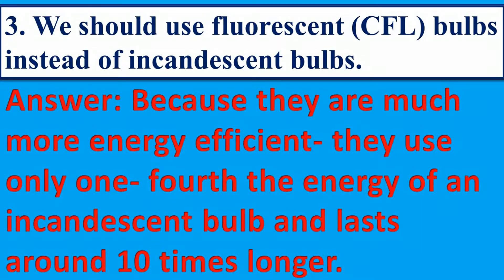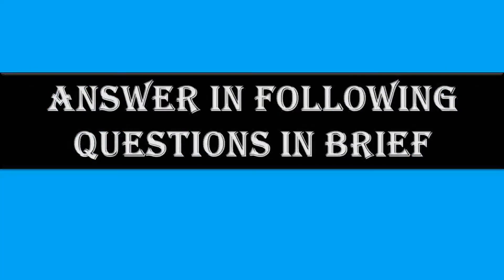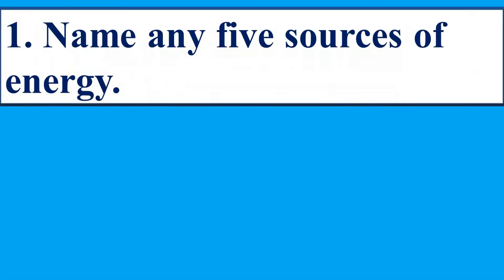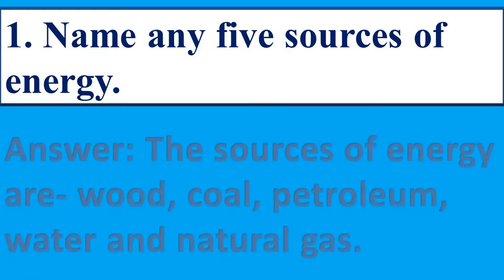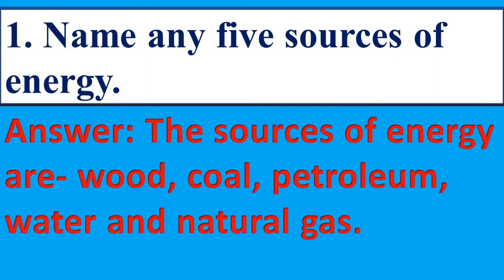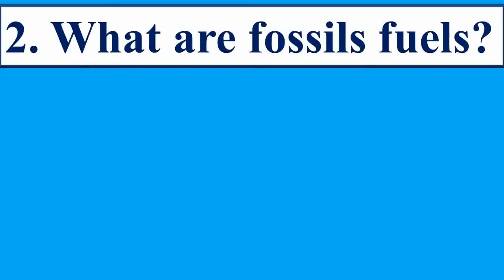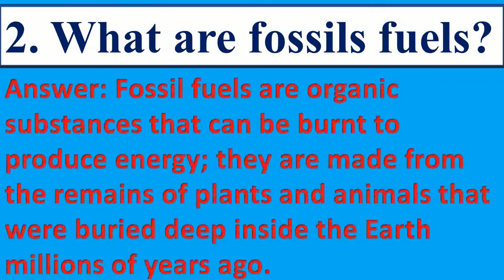CFL bulbs last around 10 times longer. Answer the following questions in brief. Name any five sources of energy. The sources of energy are wood, coal, petroleum, water and natural gas. Next question: what are fossil fuels? Fossil fuels are organic substances that can be burned to produce energy. They are made from the remains of plants and animals that were buried deep inside the earth millions of years ago.